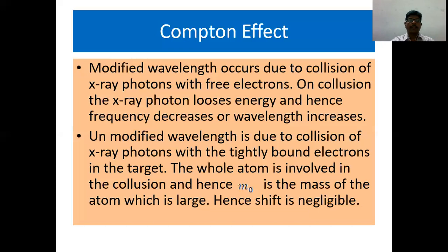Now, why do you get the modified wavelength and why do you get the unmodified wavelength? The modified wavelength occurs due to collision of x-ray photons with free electrons. On collision, the x-ray photon loses energy and hence frequency decreases or wavelength increases.